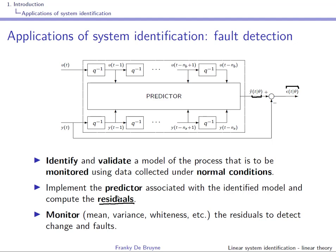There are different ways of monitoring the residual epsilon. The easiest is to look at its mean and variance, but you can also correlate epsilon with the input or correlate epsilon with itself. These approaches lead to a fault detector.